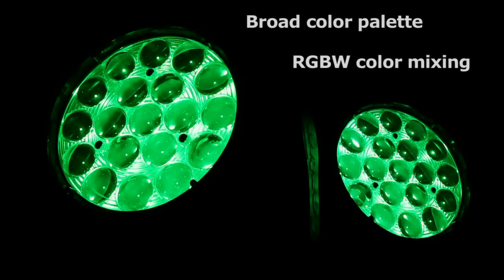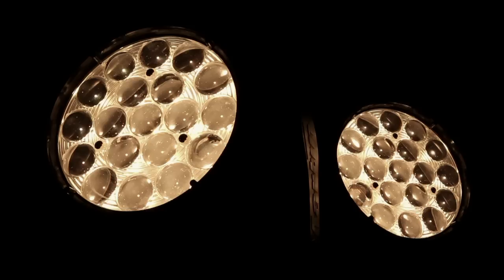So besides the special Aura effect, the Mac Aura is a very capable wash light. It has a zoom range that goes from a really tight 11 degrees out to a very wide 58 degrees. We have a very nice color palette using an RGB white color system, so we can make really nice vibrant saturated colors, really nice pastels, and various shades of really good quality white.